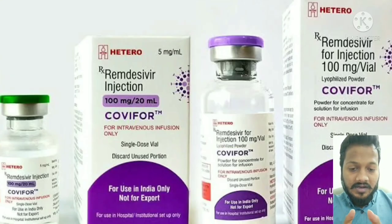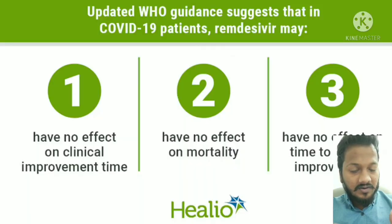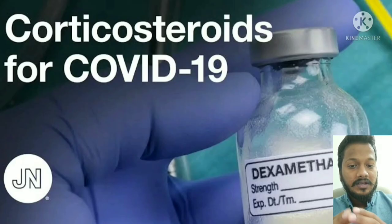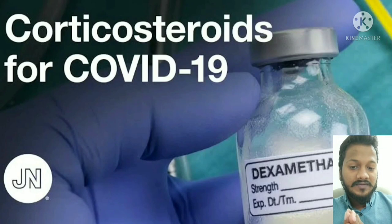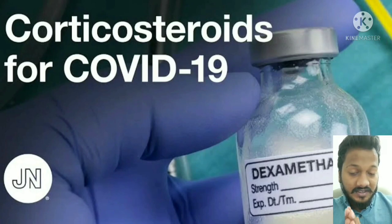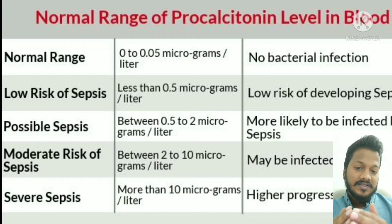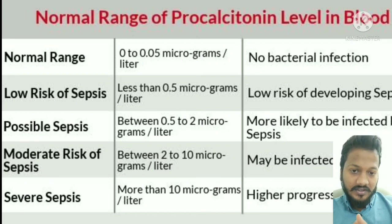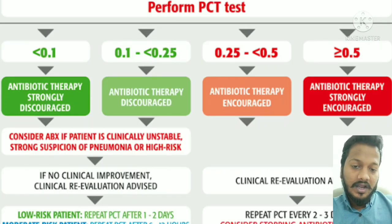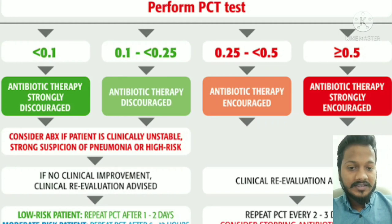In overall COVID infection, remdesivir is not a drug of mortality benefit — it only reduces hospital stay. The only drug that shows mortality benefit is steroid. Whenever we see an increase in procalcitonin levels, the patient must be put on antibiotics, because procalcitonin indicates secondary bacterial infection.